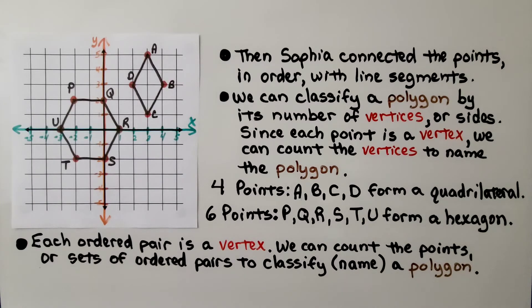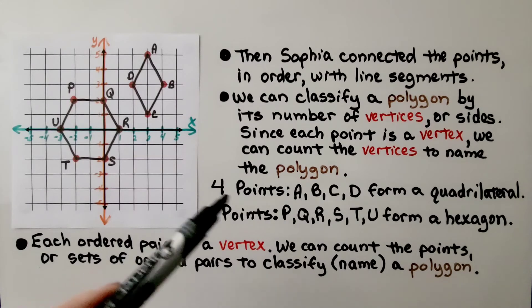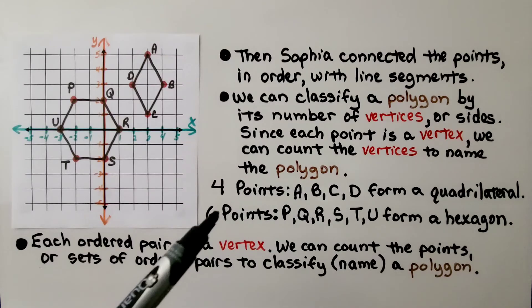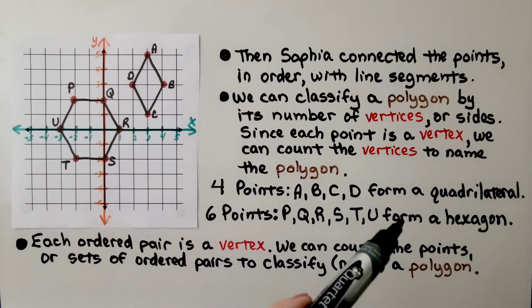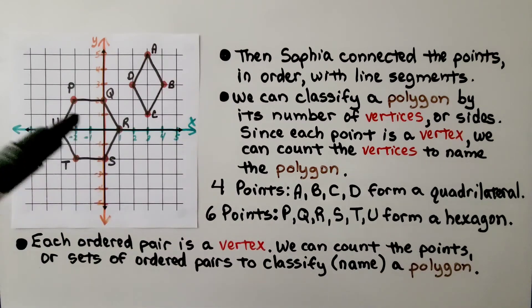Each ordered pair is a vertex. And we can count the points, or sets of ordered pairs, to classify, that means name, a polygon. We know there's 4 points, it must be a quadrilateral. If there's 6 points, it must be a hexagon because a hexagon has 6 vertices.